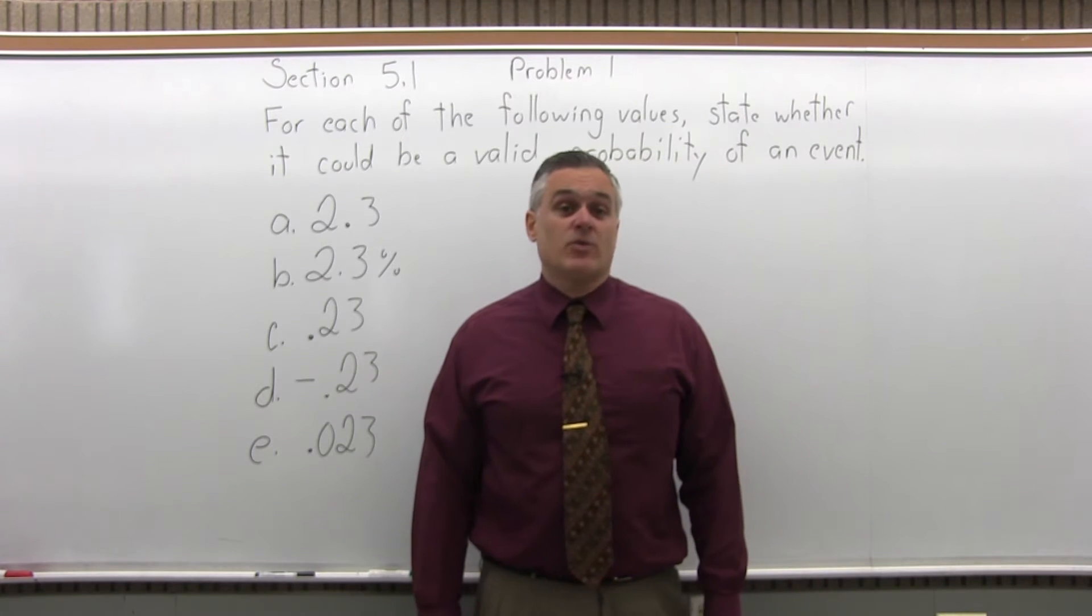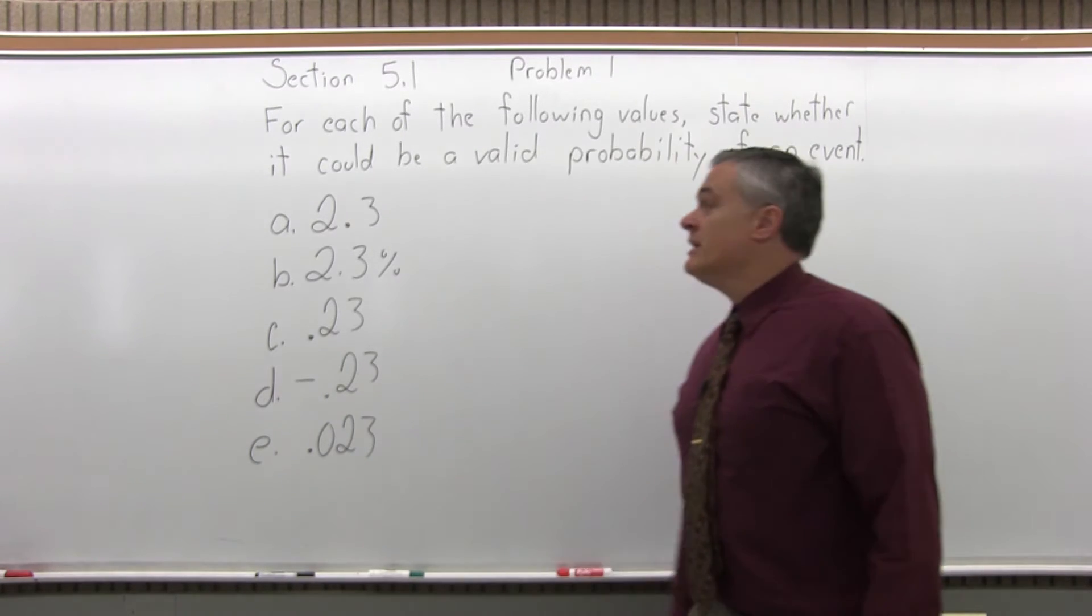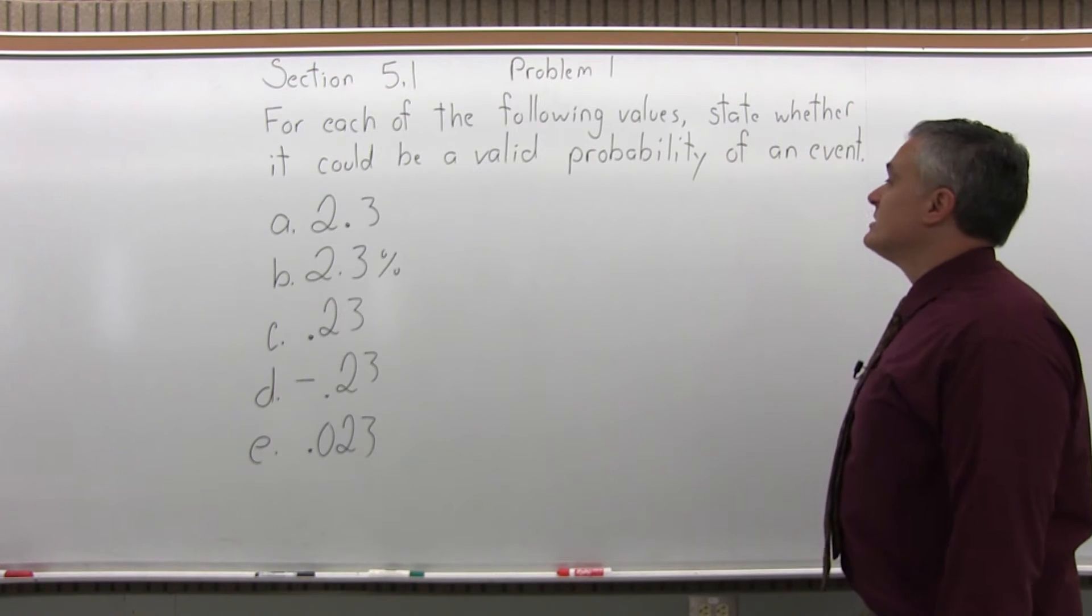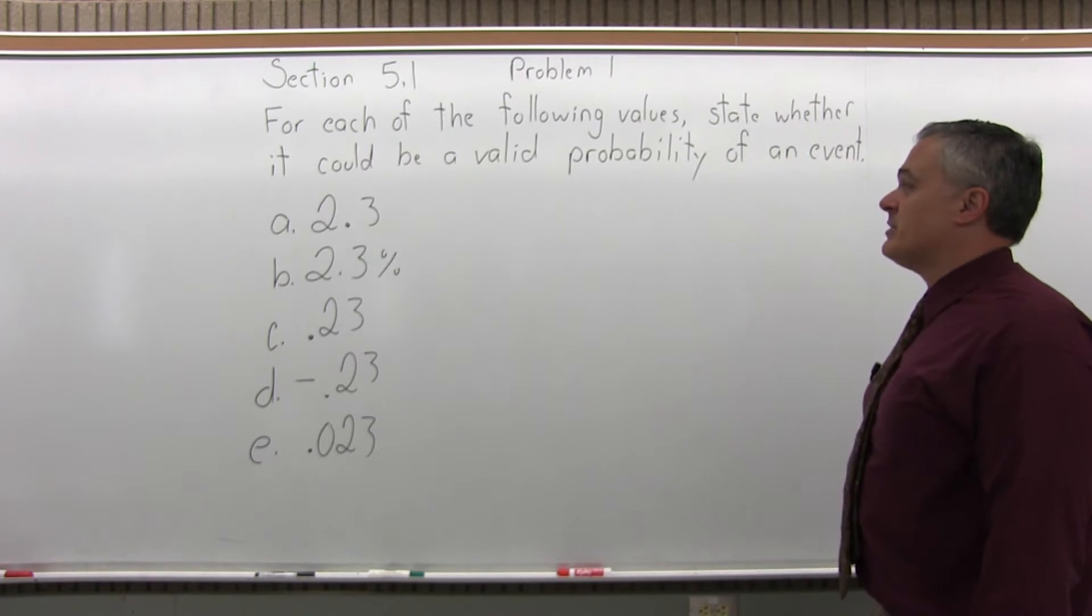This is Section 5.1, Problem number 1. It says for each of the following values, state whether it could be a valid probability of an event.